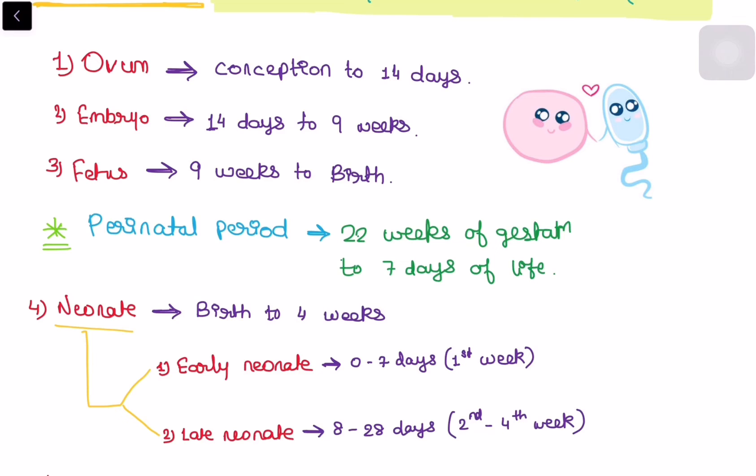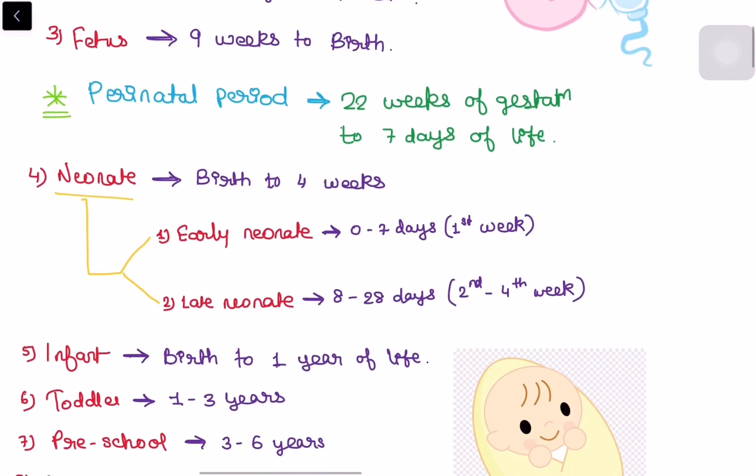Then the fourth one is the neonate. Neonate is birth to the four weeks, it is called as neonate but it is subdivided into two categories, early neonate and late neonate. Early neonate that is zero to seven days that is the first week and late neonate it is eight to twenty eight days that is second to fourth week.